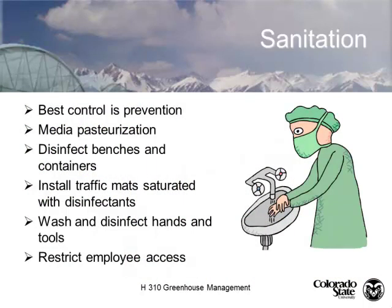So weed control is your first tool of integrated pest management. The second step is sanitation. The best control is prevention. How many people have washed their hands today? That's called prevention — that's called sanitation. You've washed your hands to keep yourself healthy. You're also going to sanitize your potting soil — pasteurize it, treat it, or make sure it's clean. Don't use dirty soil.